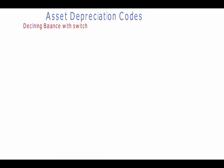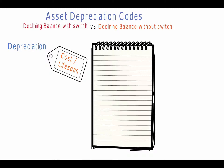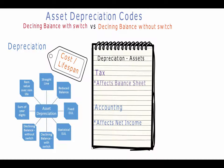Asset depreciation codes: Declining balance with switch versus declining balance without switch. Depreciation is the method of allocating the cost of a tangible asset over its useful life. Businesses depreciate long-term assets for both tax and accounting purposes. The former affects the balance sheet of a business or entity, and the latter affects the net income that they report. CISPRO allows different depreciation types or methods to be applied to assets.